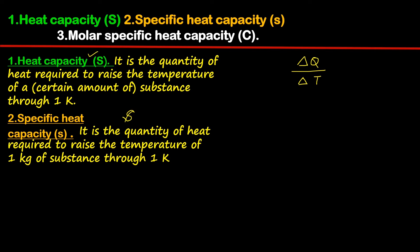A more precise term is specific heat capacity, represented by the small letter s. Be careful with this symbol — small s for specific heat capacity should not be confused with capital S for heat capacity. Specific heat capacity is the quantity of heat required to raise the temperature of one kilogram of the substance through one K. In SI units, the unit of mass is kilogram.